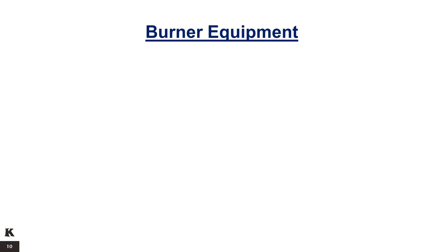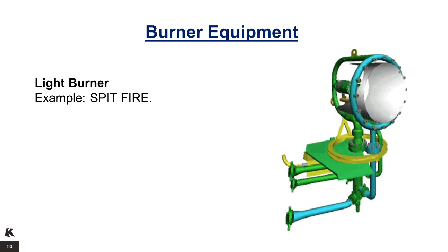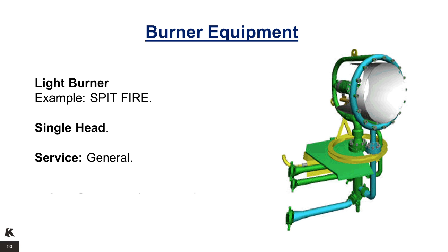Burner Equipment — Light Burner. Example: the Spitfire. It is a single-headed burner used for general service. Its capacity is 4,000 barrels of oil per day at 300 PSI.